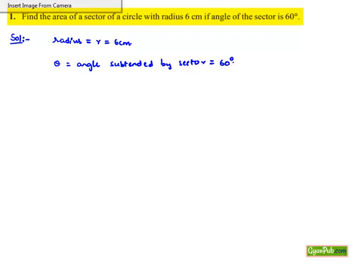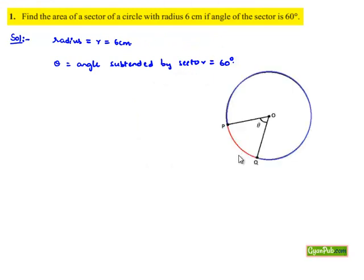So let us draw the figure as shown here. PQ is the arc and PVQ is the sector. We need to find the area of the sector that is the shaded region as shown here. The theta is given as 60 degrees and radius is given as 6 cm.